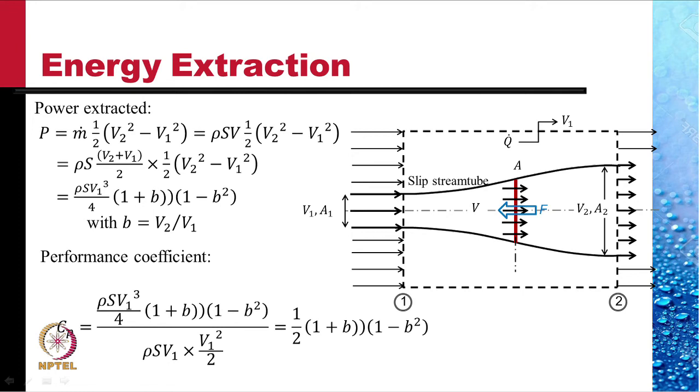We define the performance coefficient of the windmill as the power extracted divided by what was the power available in the incoming stream in the slip stream tube. And that is rho S V1 cube. And so the power coefficient value is one half 1 plus B into 1 minus B square.